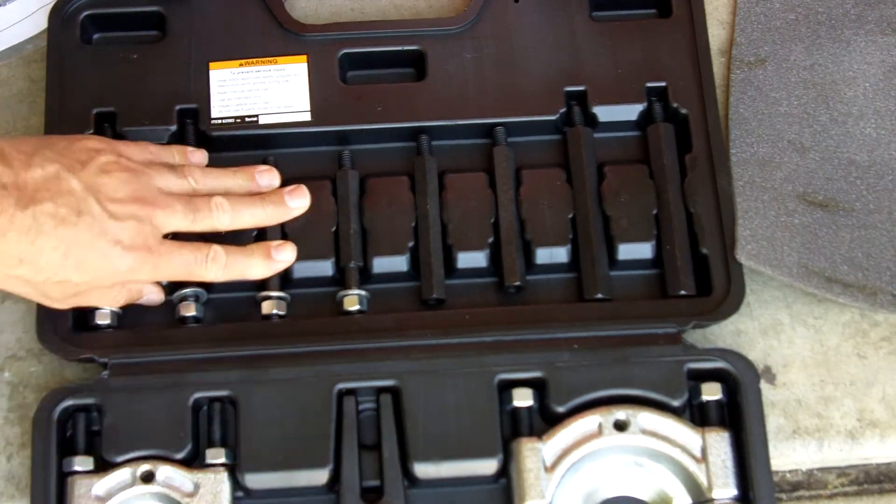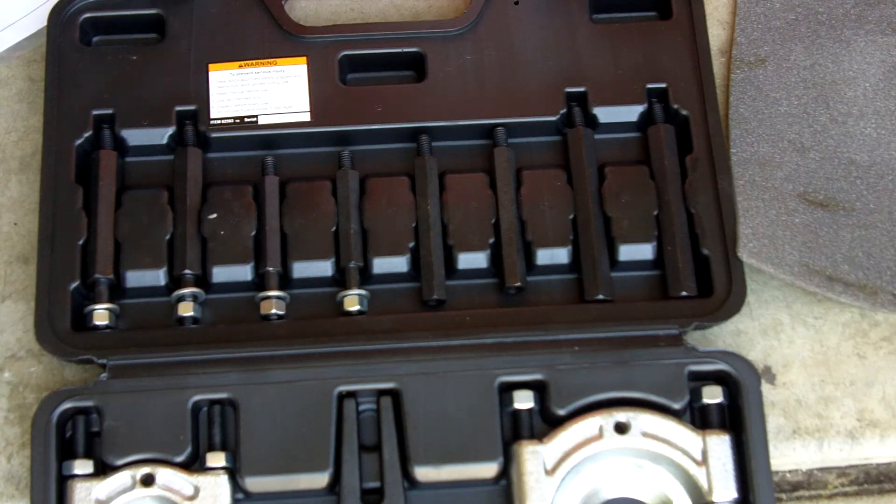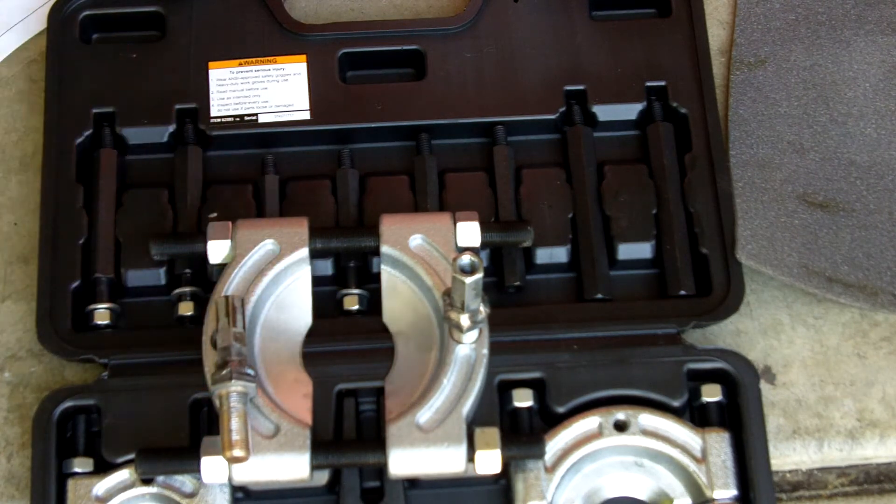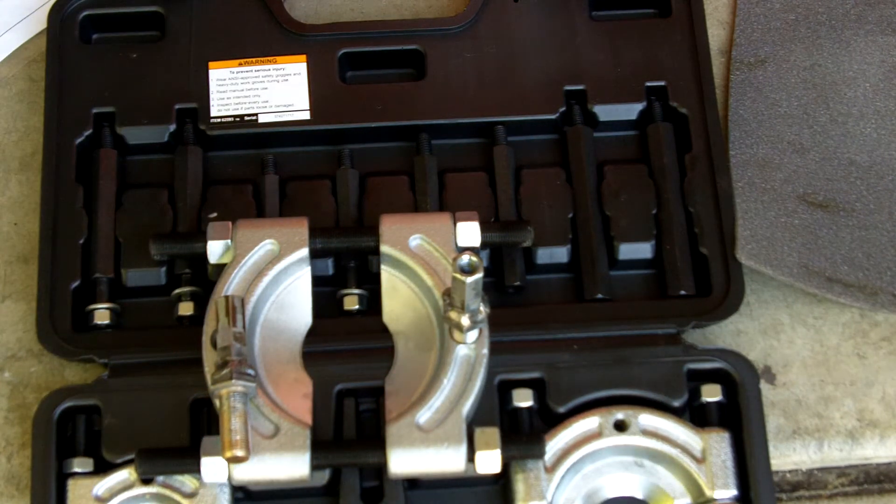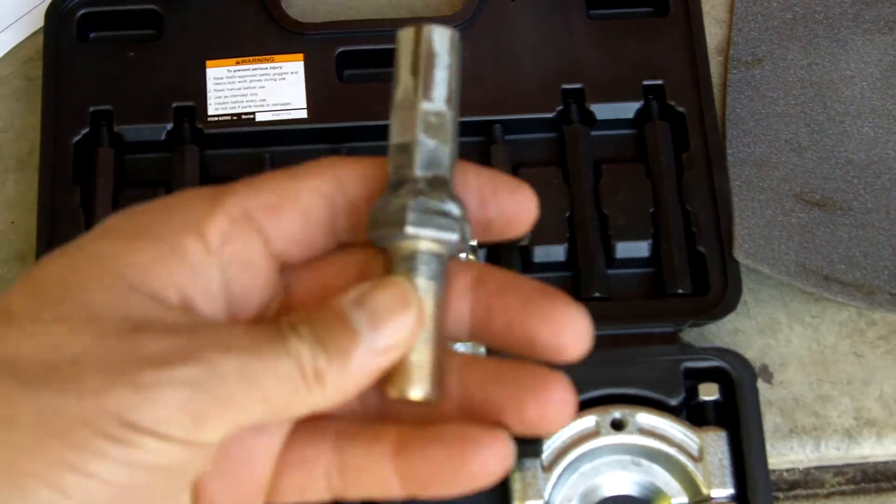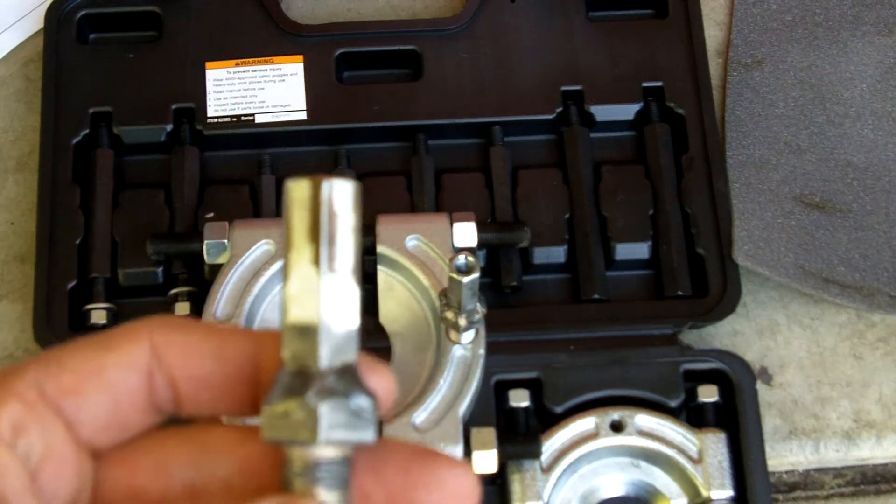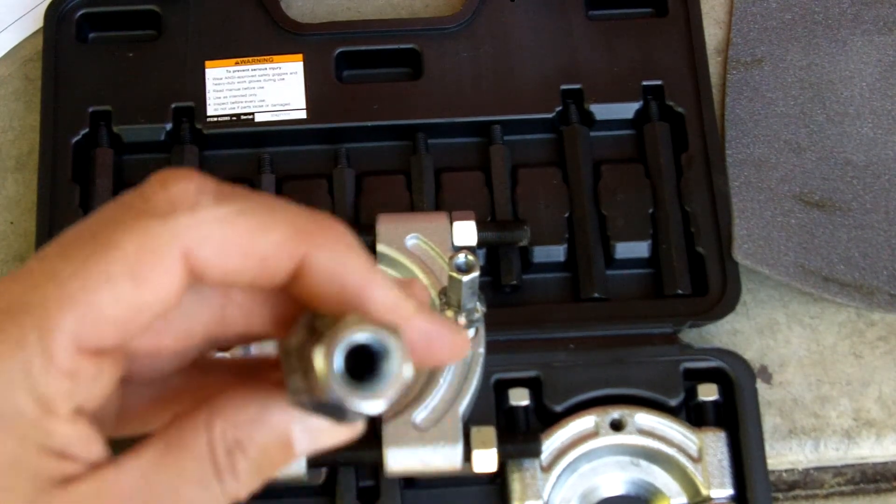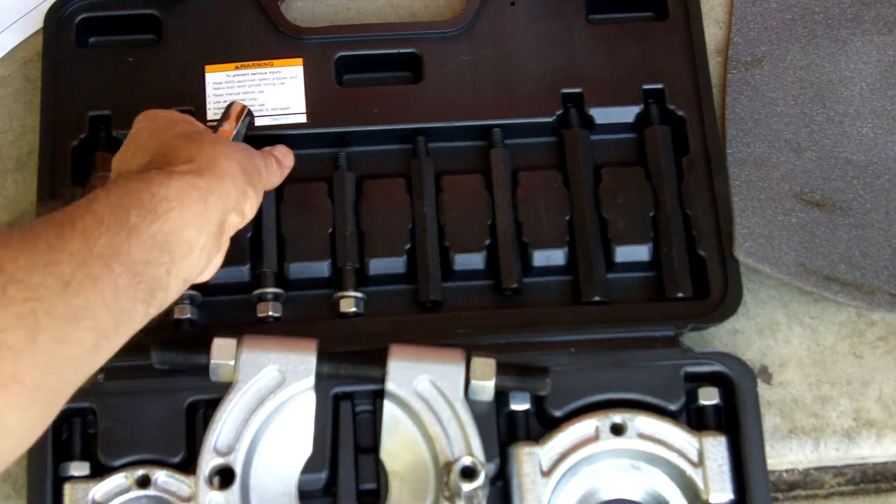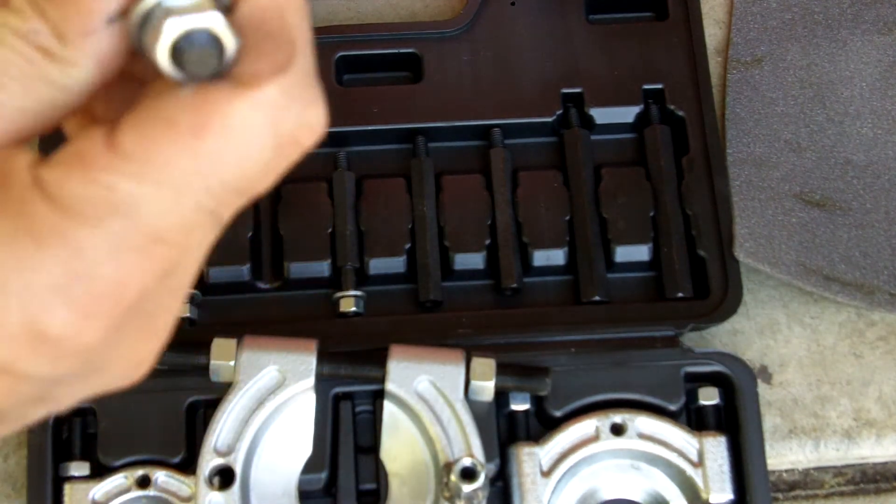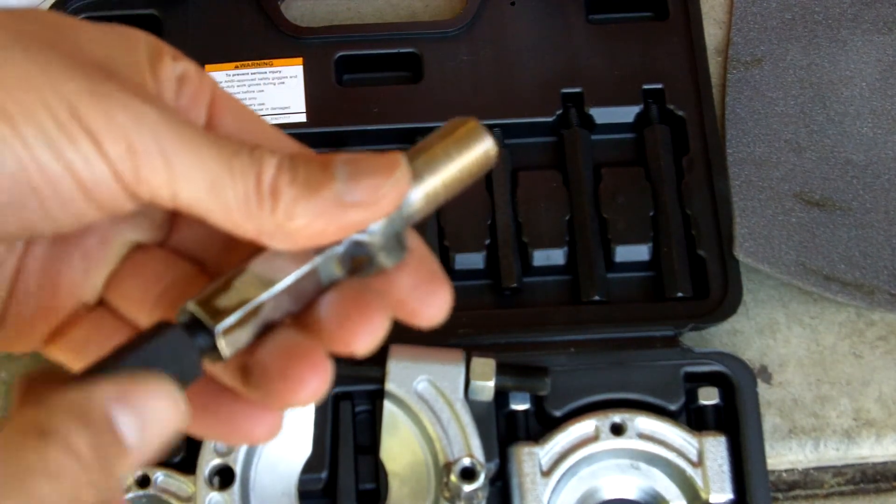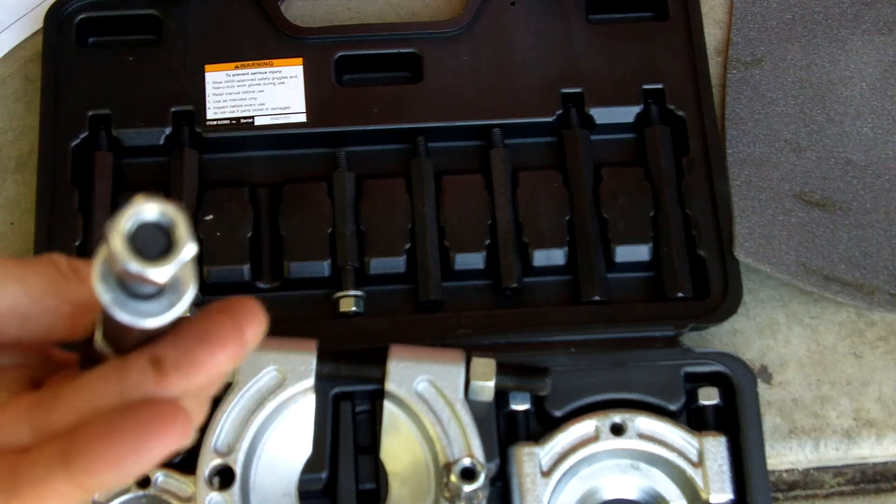So what I did was took and welded a 5/8 bolt, 5/8 by 18 thread to a 3/8 by 16 collet, so that these extensions would then screw into those and go into the puller.